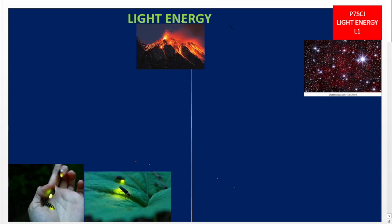We looked at various forms of energy — magnetism, chemical energy in the food we eat, light energy, sound energy, and very many others. In this lesson, we are now going to look at light energy in detail. Let us start by defining what light energy is.